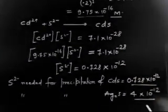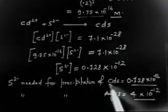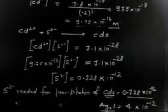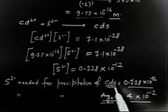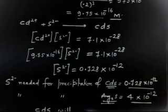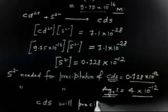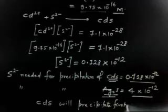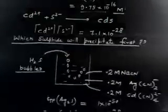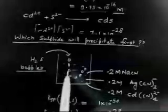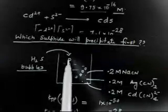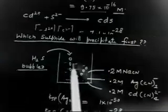Comparing the two values: [S²⁻] needed for CdS = 0.728×10⁻¹² M, and [S²⁻] needed for Ag₂S = 4×10⁻¹² M. The 10⁻¹² factor is common in both. Since [S²⁻] needed for CdS is less, CdS will precipitate first. As H₂S is bubbled in, [S²⁻] slowly increases.